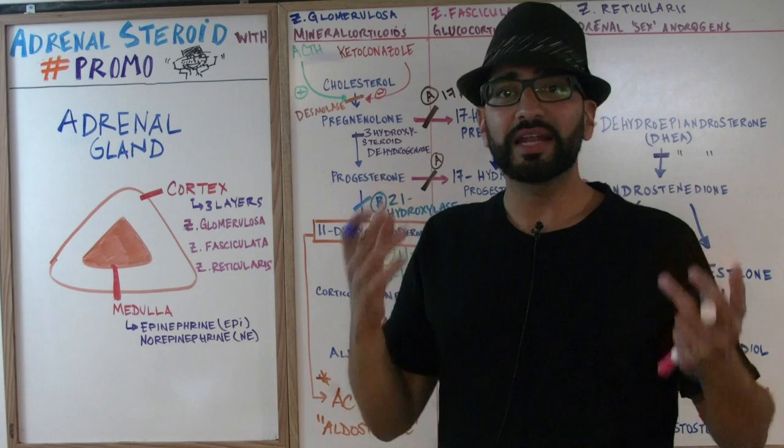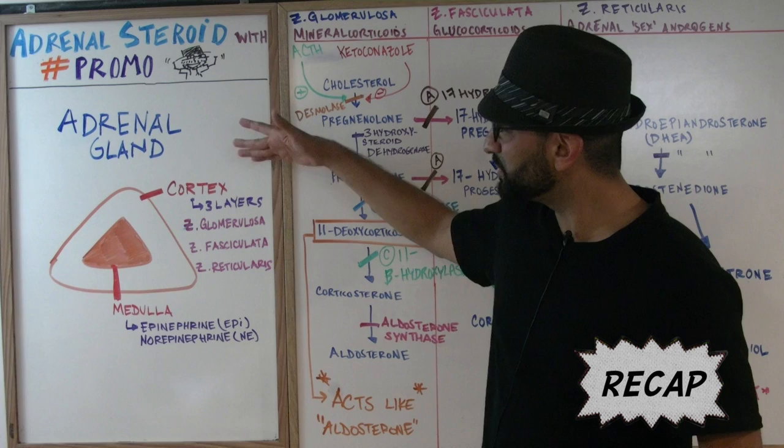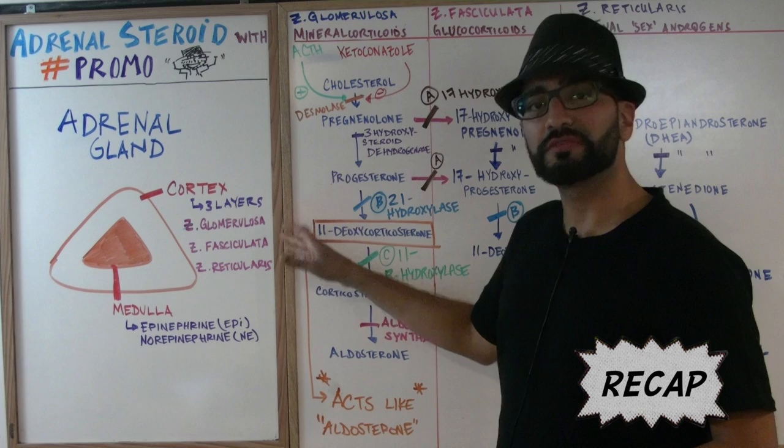I'm going to do a quick recap on the adrenal gland and then we'll get right into this colorful chart right behind me. The adrenal gland, as you already know, is divided up into the cortex and the medulla. The cortex has three layers: the zona glomerulosa, zona fasciculata, and zona reticularis.